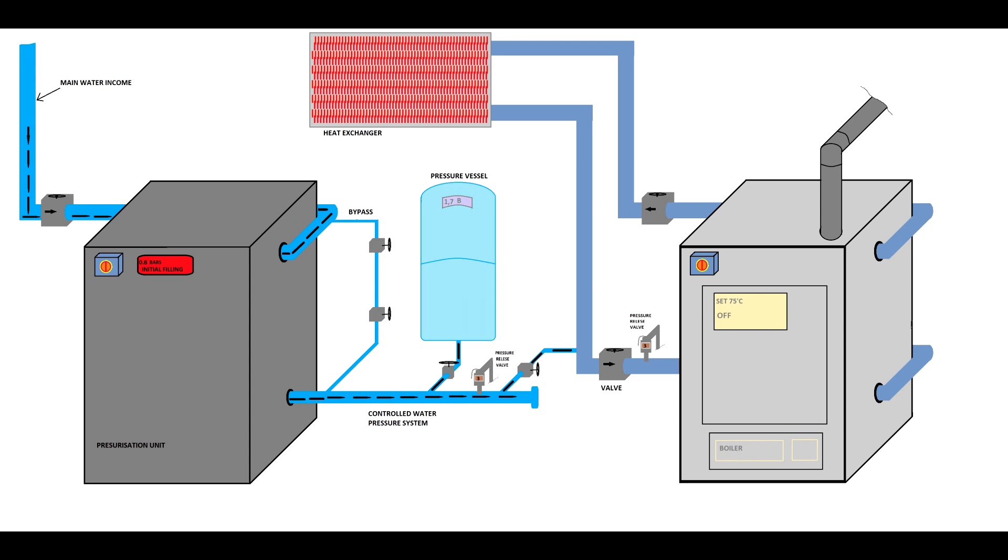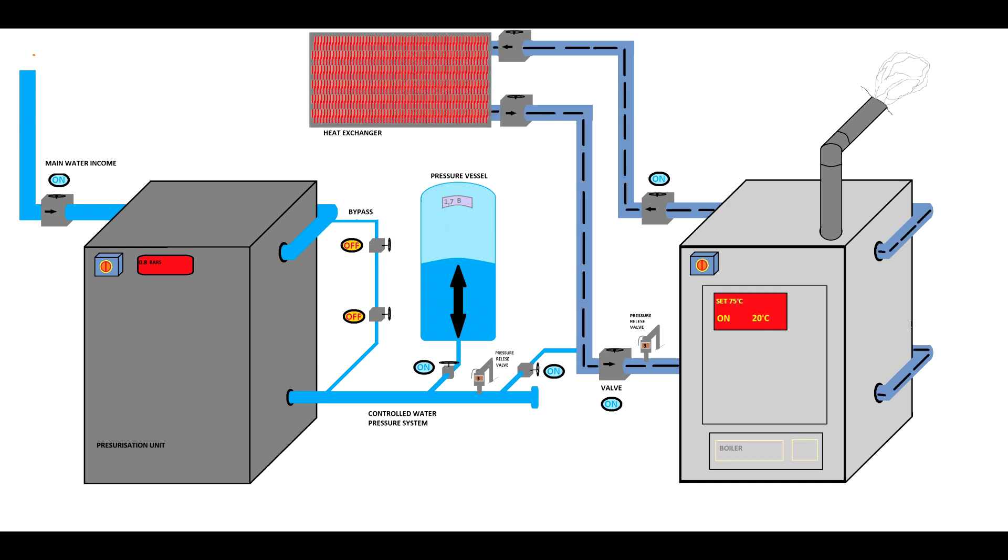The pressurization will push water into the system until it reaches minimum pressure, which is set by you. I usually set it at 0.5 to 0.8 bars. Once the pressure reaches the parameter set by you, the boiler will start working.